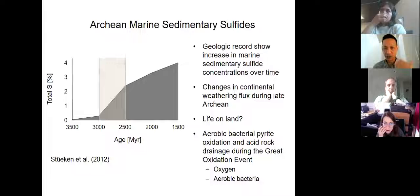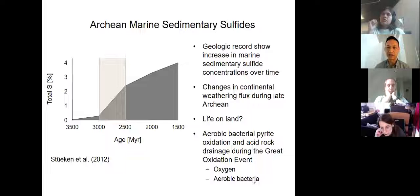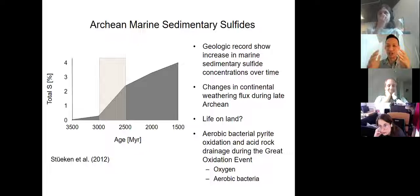Her hypothesis echoed the sentiments of Kurt Konhauser, who also postulated that there was aerobic bacterial pyrite oxidation and acid rock drainage formed during the Great Oxidation. The Great Oxidation event started around 2.5 billion years ago — that last point is actually the title of a Nature paper that Kurt Konhauser published a few years ago. Now both Eva and Kurt are very good friends of mine — I did my postdoc with Kurt Konhauser — but I'm going to challenge the model they are proposing, and I'm going to argue that you don't need life and you don't need oxygen to generate this observation.